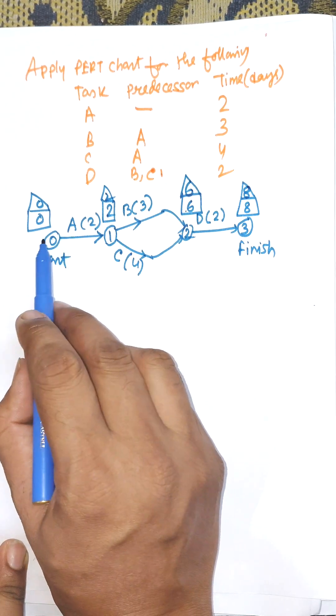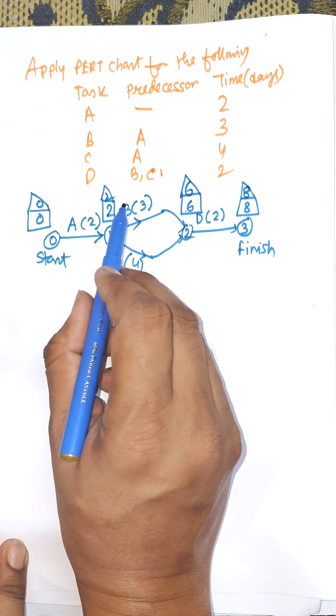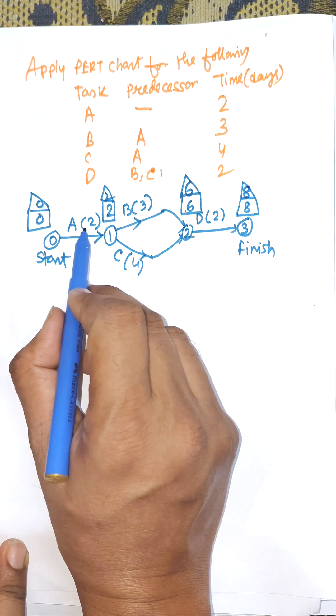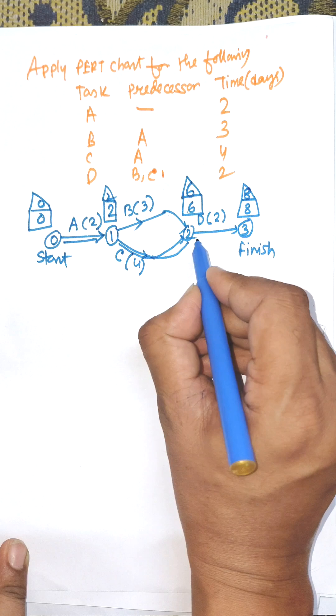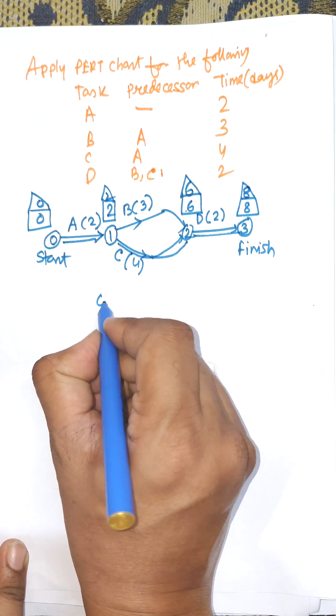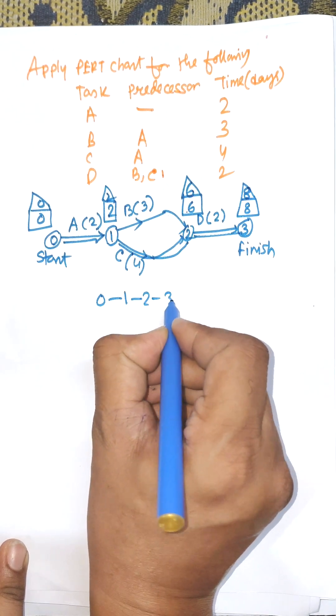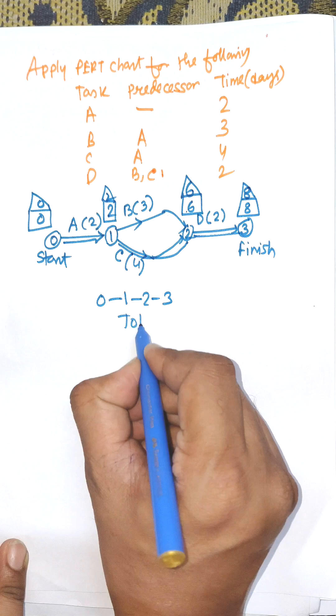The critical path is total duration that is 8. We need to consider 2 plus 4 plus 2, that means 0 to 1, 1 to 2, and 2 to 3. So 0 to 1, 1 to 2, 2 to 3 is known as critical path. Total duration is 8.